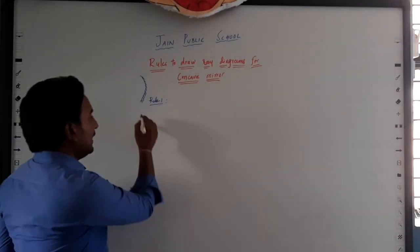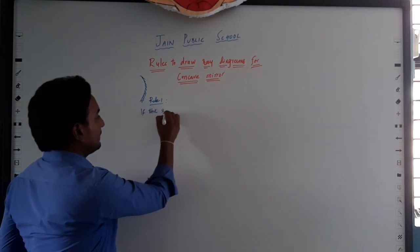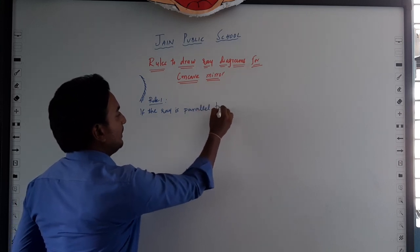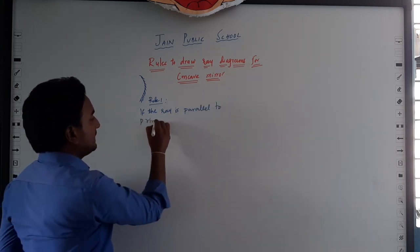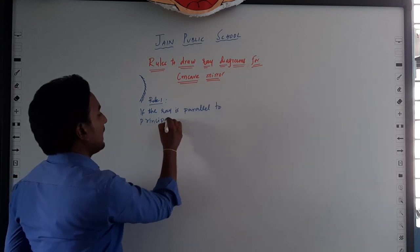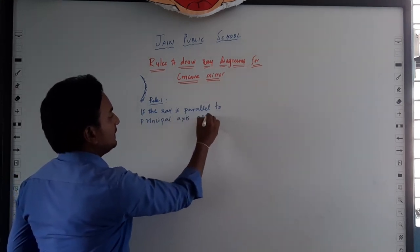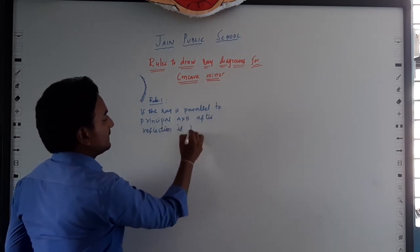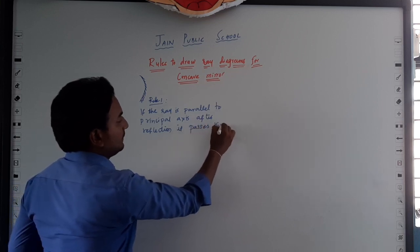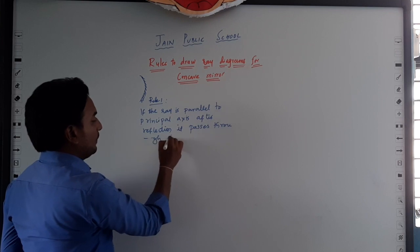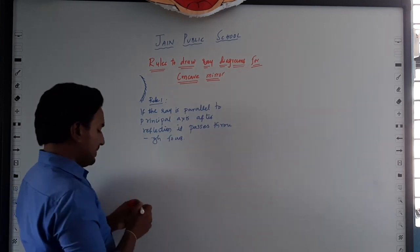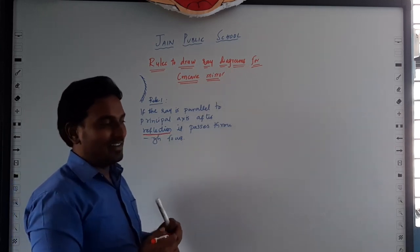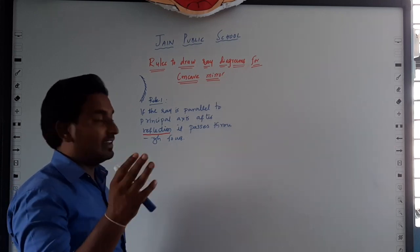Rule number 1 states that if the ray is parallel to the principal axis, then after reflection, it passes through the focus. Very important — I used the word reflection because this reflection occurs in a mirror.